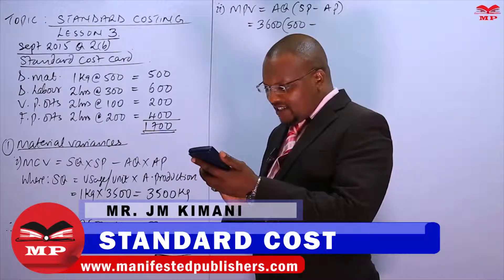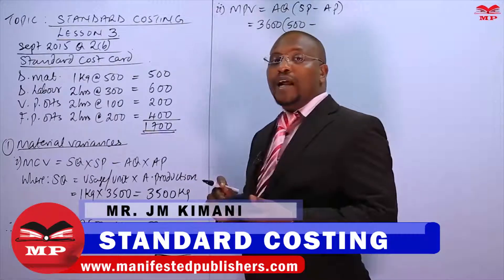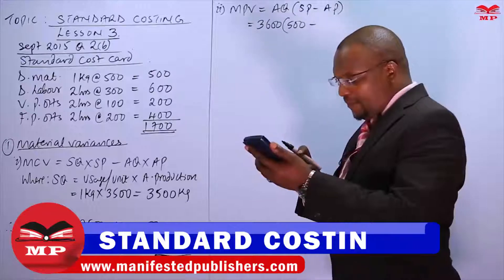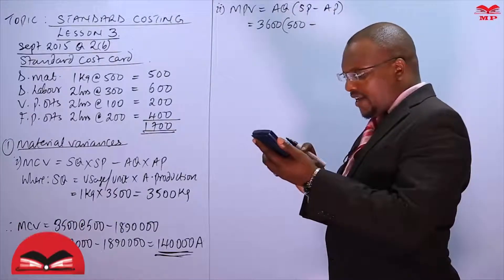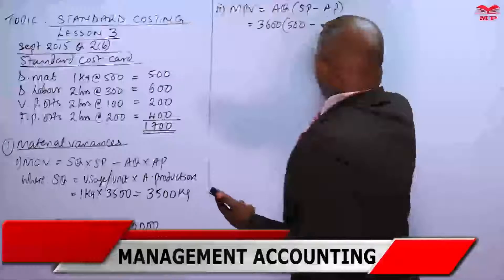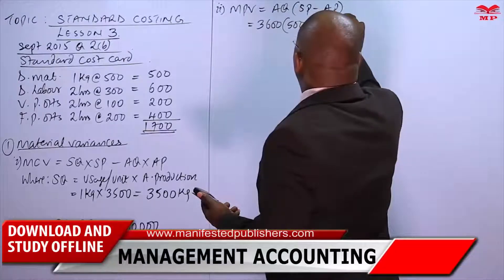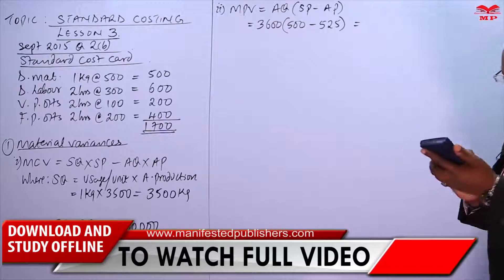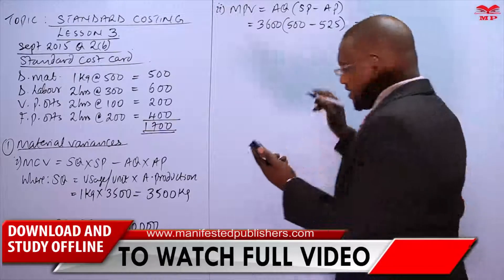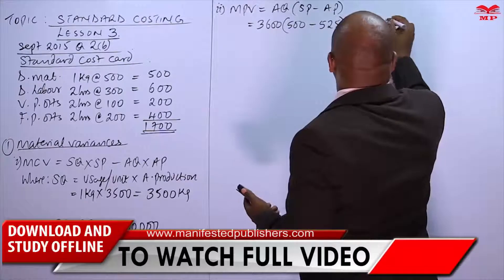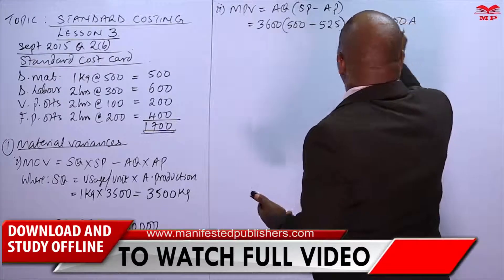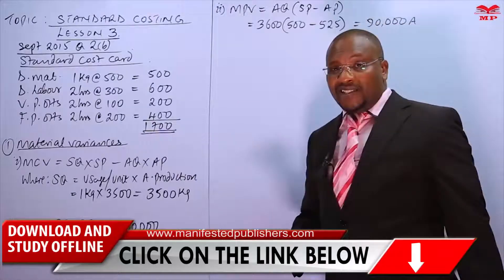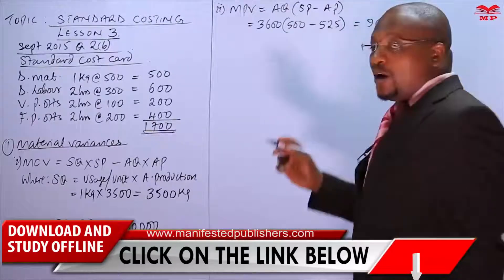Note: in note one the actual quantity is given as 6,000 kgs, but there appears to be an error — it should be 3,600 kgs, as 6,000 is inconsistent with the standard quantity of 3,500. The actual price is 1,890,000 ÷ 3,600 = 525 shillings per kg, meaning we overspent by 25 shillings per kg. So the material price variance = 3,600 × 25 = 90,000 shillings adverse. The remaining 50,000 of the 140,000 adverse must be explained by the material usage variance.